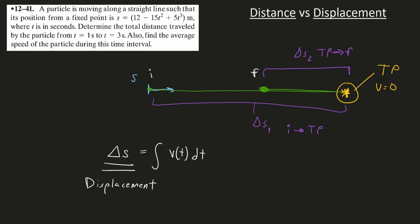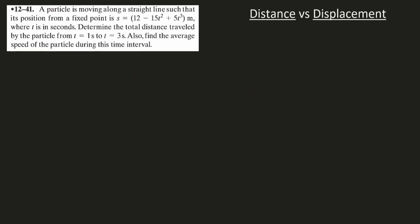You have a particle moving along a straight line. We'll make an s-axis, positive to the right, and here is zero. We have an equation for it. We want the total distance traveled from time equals one to time equals three. Let's figure out if we have any turning points, because that's really where displacement and distance cease to be the same thing. I'm going to take the derivative of my position equation to get velocity. That's just simply doing the power rule. That'll be -30t + 15t².